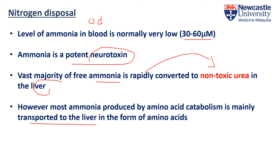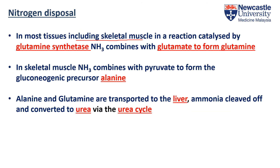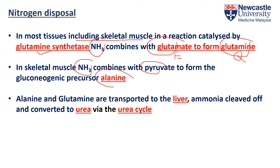Because ammonia is very toxic, it is transported to our liver in the form of amino acids — glutamine and alanine. In most tissues including skeletal muscle, ammonia can be combined with glutamic acid to form glutamine. This reaction is catalyzed by the enzyme glutamine synthetase. In a second reaction, muscle also has the enzyme to combine ammonia with pyruvate, forming alanine.